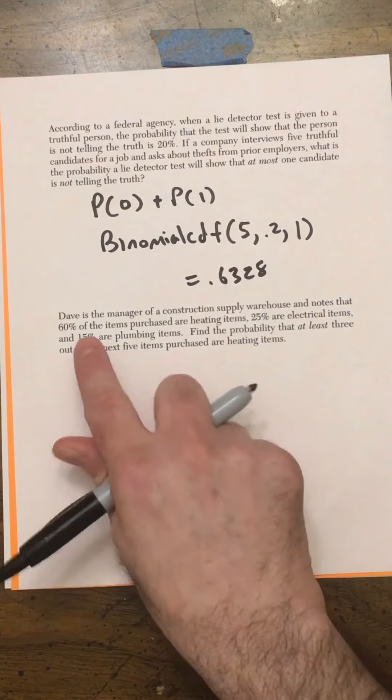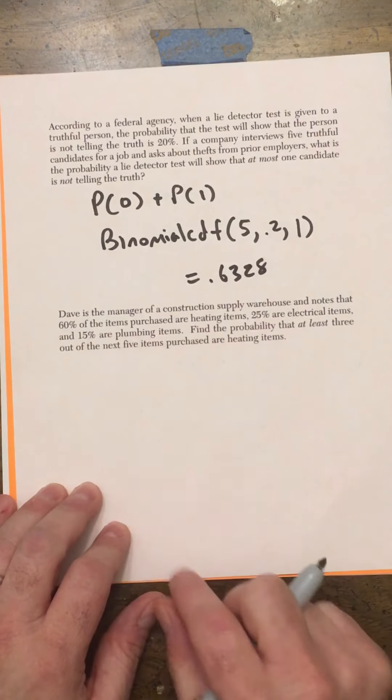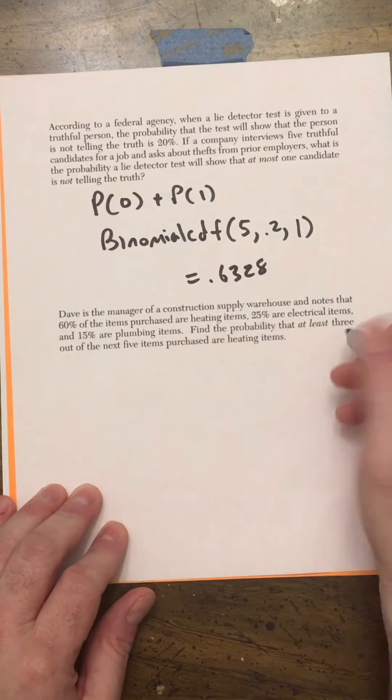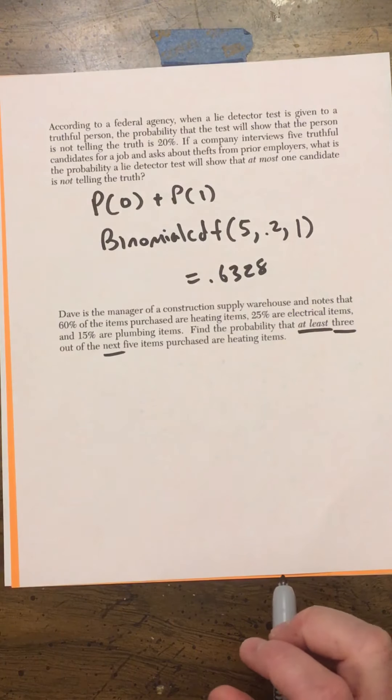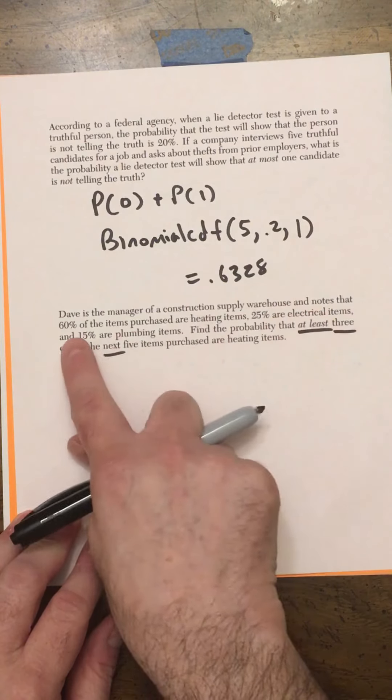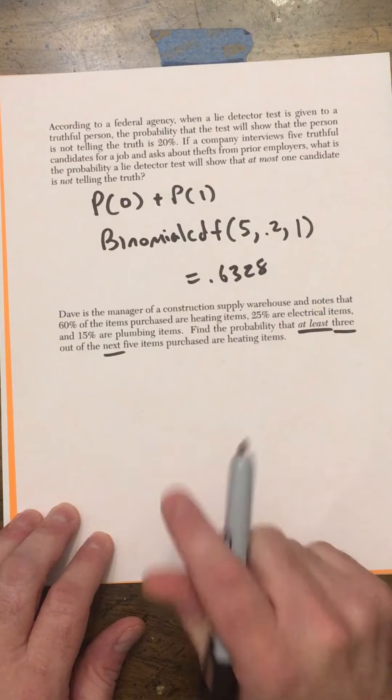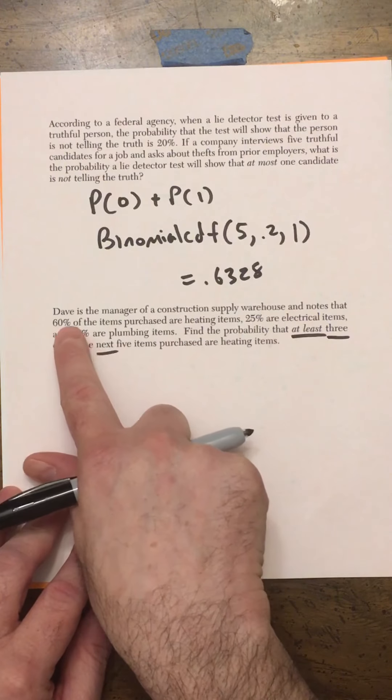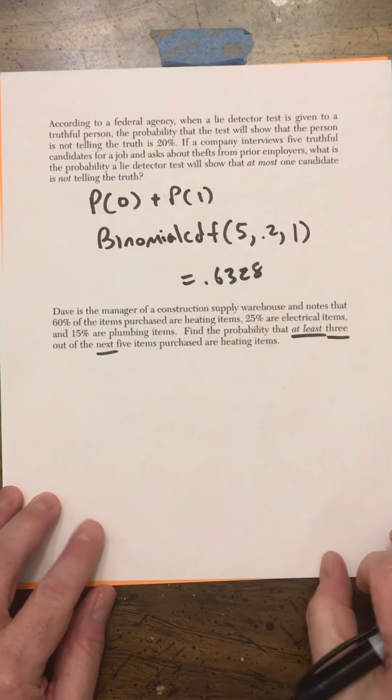And the last problem. Dave is a manager of a construction supply warehouse and notes that 60% of the items purchased are heating items, 25% are electrical items, and 15% are plumbing items. Find the probability that at least three items of the next five are heating items. So you might say, well, we can't do this. It's not really binomial because we have 60% are heating, 25% are electrical, and 15% are plumbing. That's more than two things. But actually, we can categorize them in two ways, the heating items and the non-heating items. So the probability of getting heating items is 0.6, and everything else is 0.4, so we can combine those as one category.